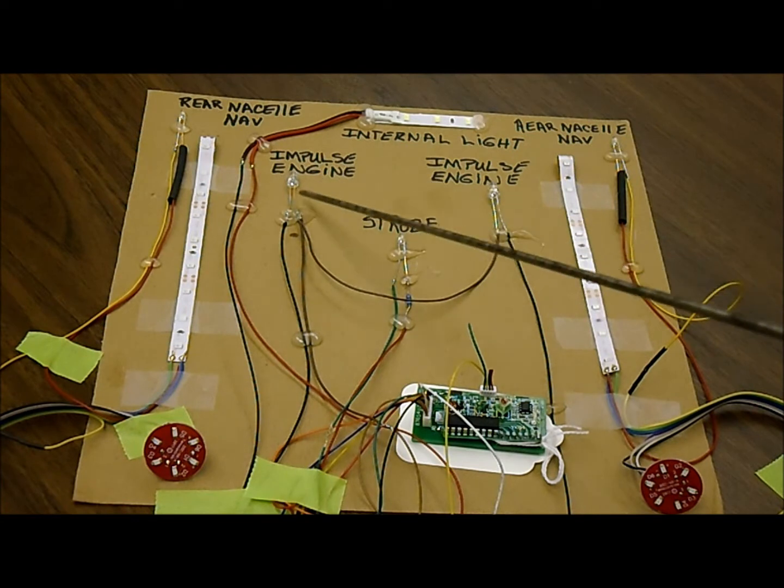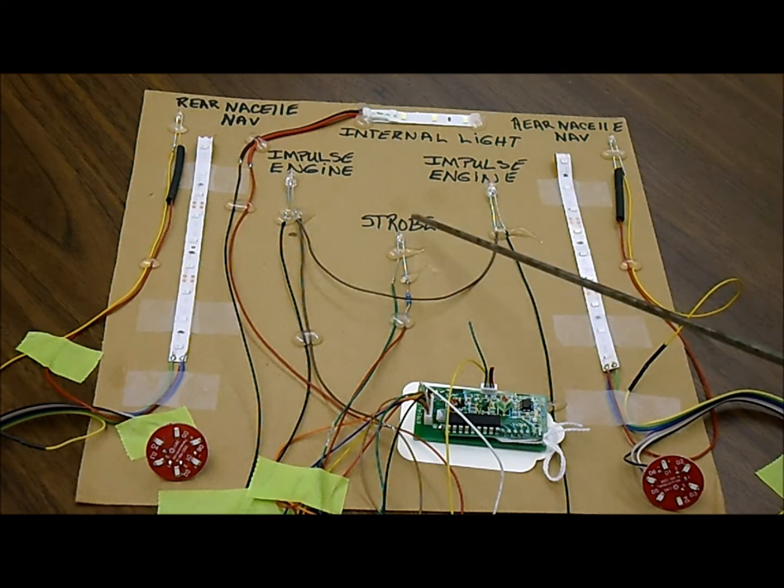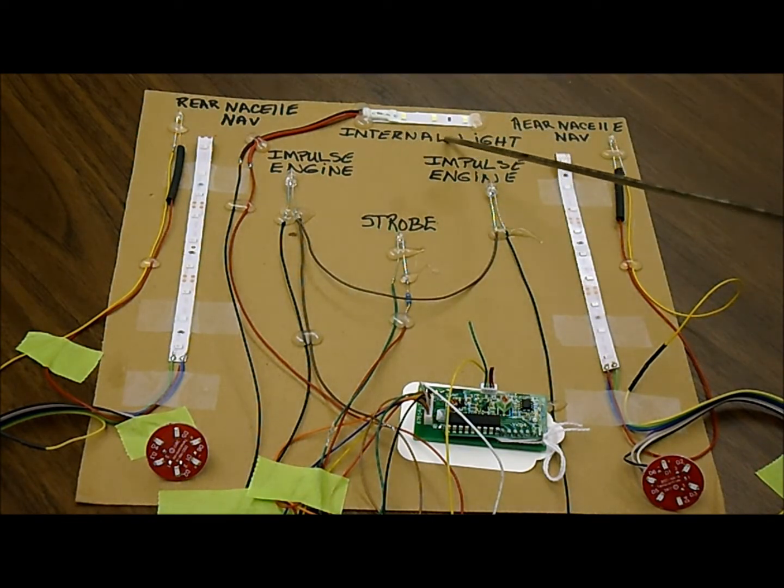These two lights, as you can tell it says impulse engines, that's the strobe. Again, we're not showing you all the connections, just indicative of the function. This one is representative of the internal lighting, and of course we have the plasma effect on the left and right.